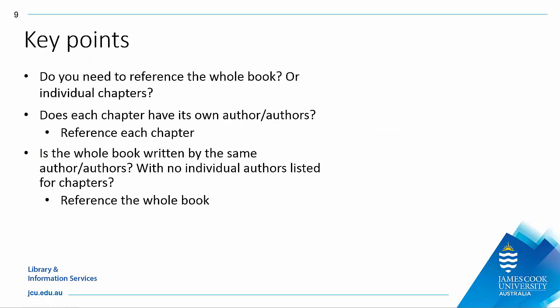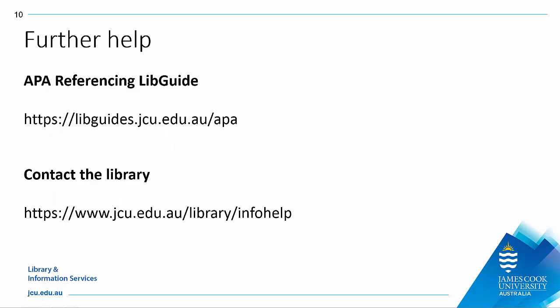Let's recap what we have covered. The key points to consider when referencing from a book are: do you need to reference the whole book or each chapter on its own? To decide, check if the chapter has its own author or authors. If yes, each chapter must be referenced separately. If not, reference the whole book once. If you need help with referencing, consult the APA referencing guide. For further assistance, please contact the library.